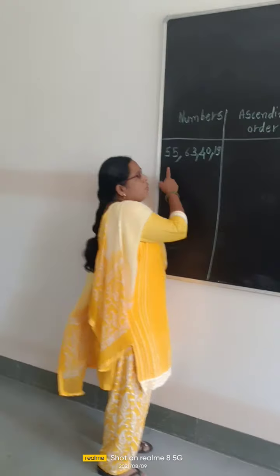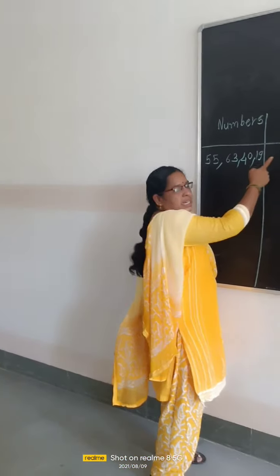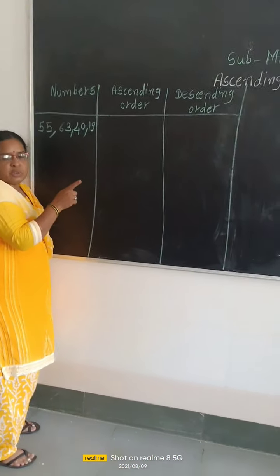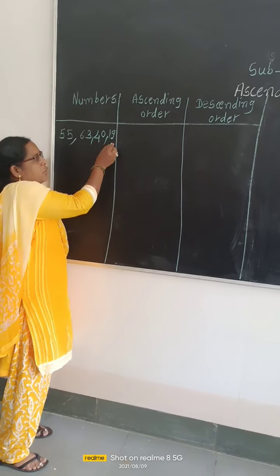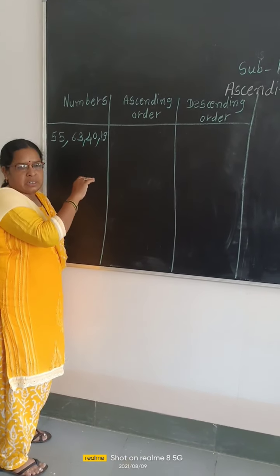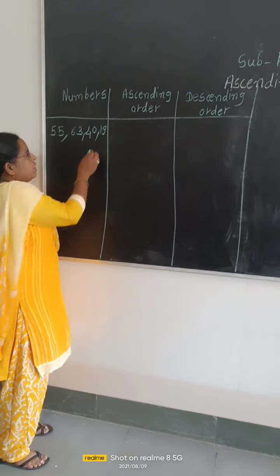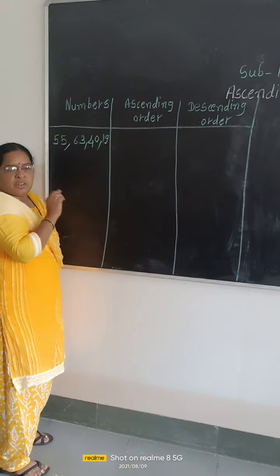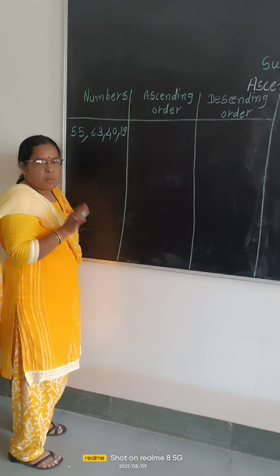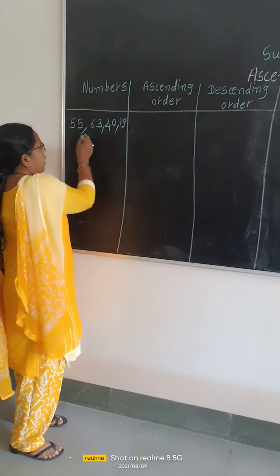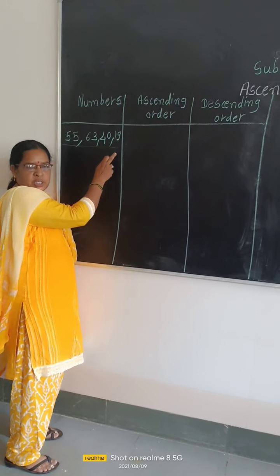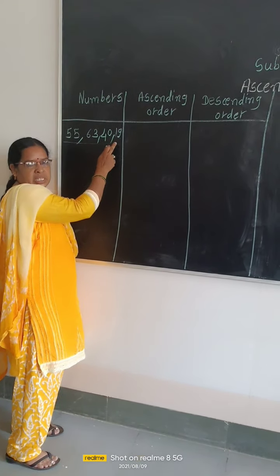Now, ascending means we are starting to arrange the numbers from smallest to bigger. From the given numbers, find which number is smallest. From the given numbers, which number is smaller?